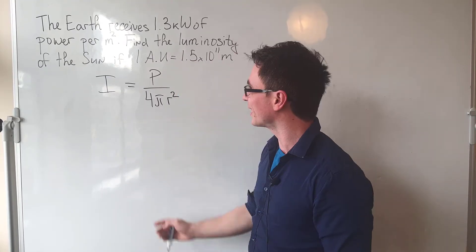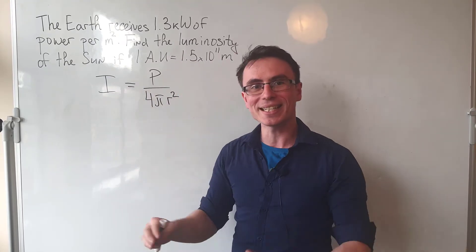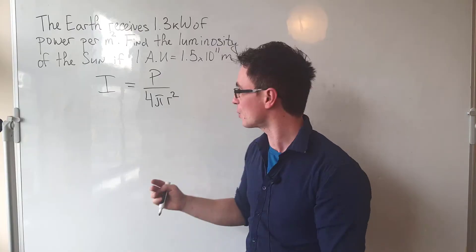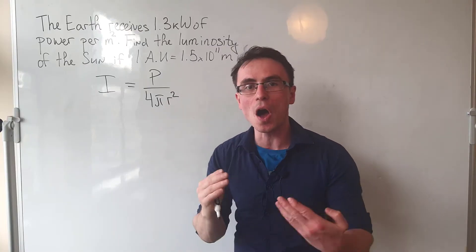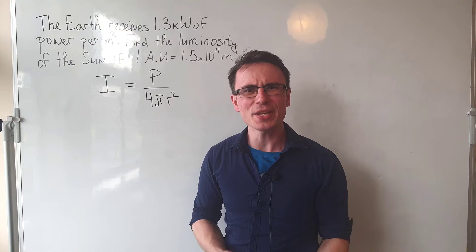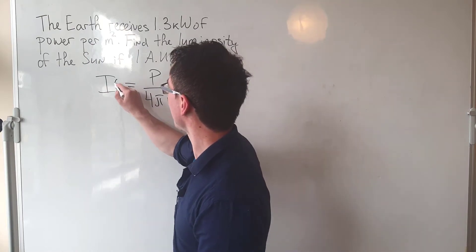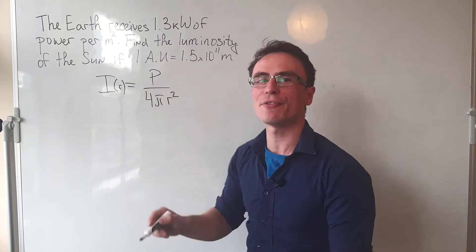This equation is telling us how does the intensity change with distance r from the source. In a way, you can think of it as intensity as a function of r.